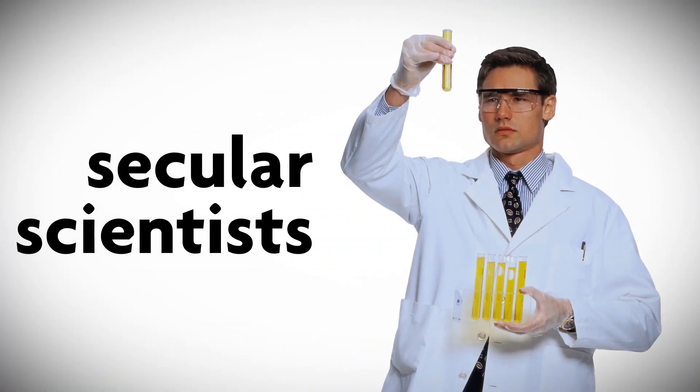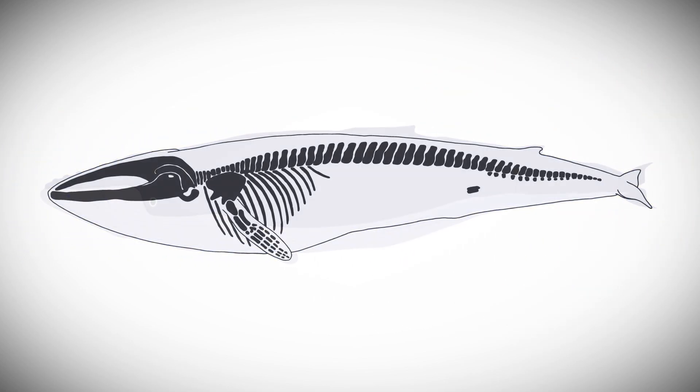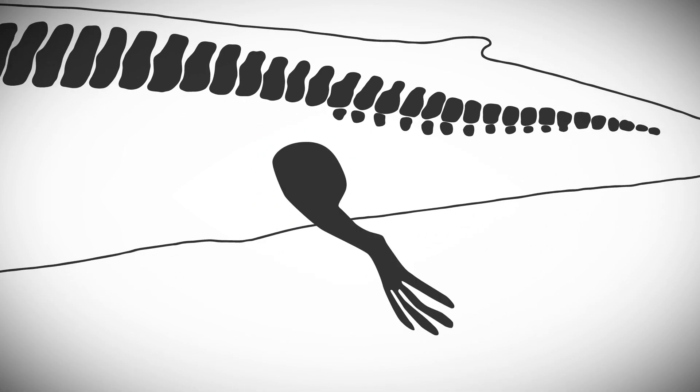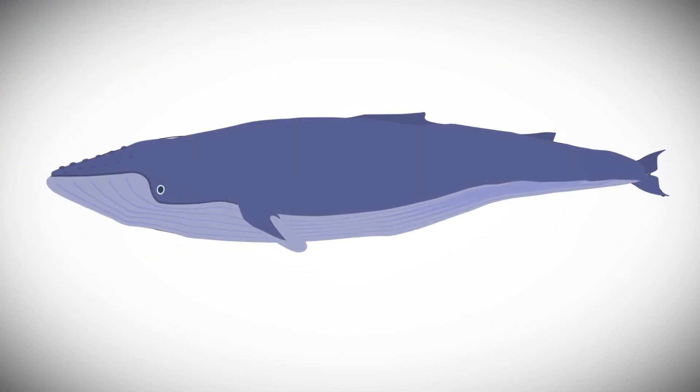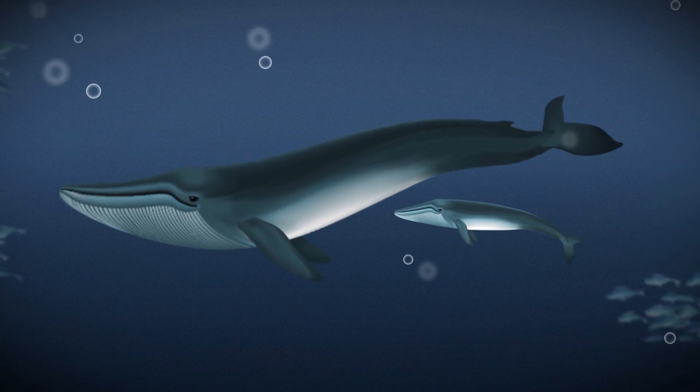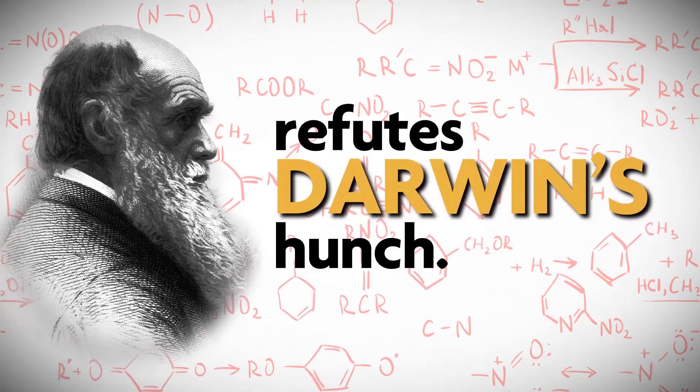Secular scientists often point to vestigial features as evidence for evolution. They assumed that certain whale hip bones were useless legs left over from land mammals evolving into whales. Come to find out, those bones play a pivotal role in helping whales reproduce. They aren't useless at all. The most complete scientific evidence refutes Darwin's hunch.